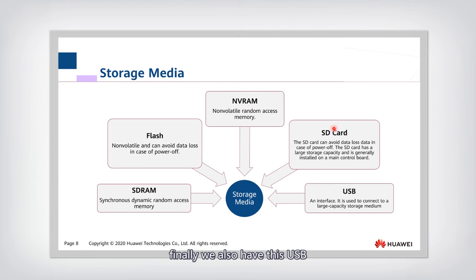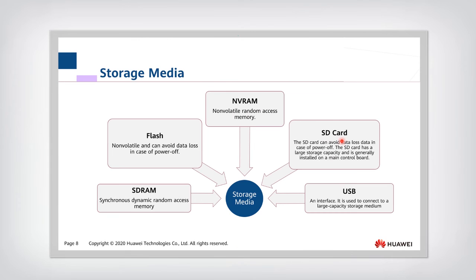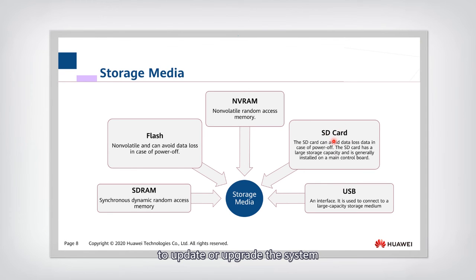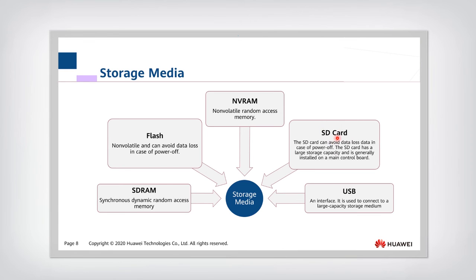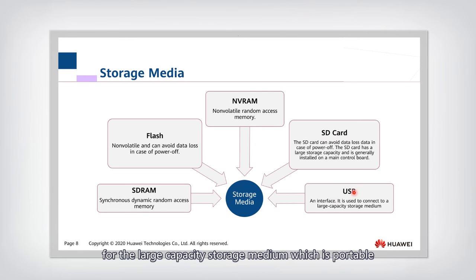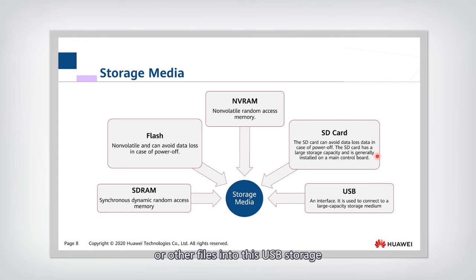Finally, we also have USB. The SD card is a kind of portable storage — engineers can use files on the SD card to update or upgrade the system, so patch files are usually put on the SD card. Similarly, USB can also provide an interface for large-capacity portable storage. You can also put patch files or other files into USB storage.